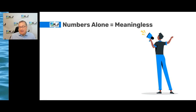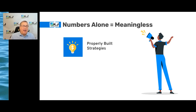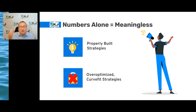Some pointers: the numbers themselves, with no context or description of how they were made, are meaningless. If it's a properly built strategy, that's great. But if they're over-fit and over-optimized, then the numbers are worse than meaningless — they're terrible. You should never follow them.